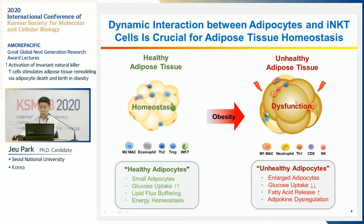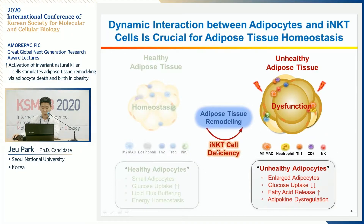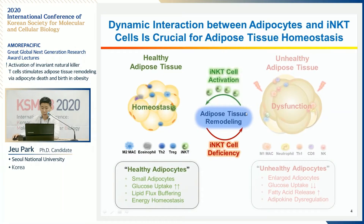In obesity, unhealthy adipose tissue remodeling occurs, accompanied by accumulation of many pro-inflammatory immune cells such as M1 macrophages and neutrophils, and unhealthy adipocytes are frequently observed. Meanwhile, if iNKT cells are deficient in obesity, unhealthy adipose remodeling is promoted, whereas activation or supplementation of iNKT cells restores adipose homeostasis.